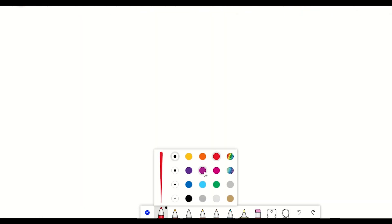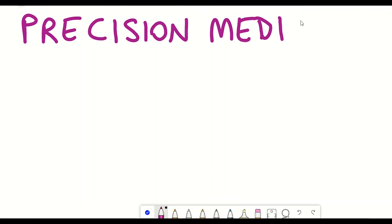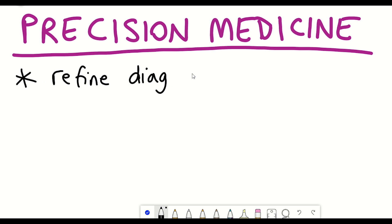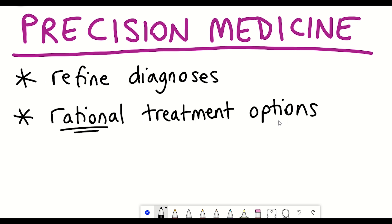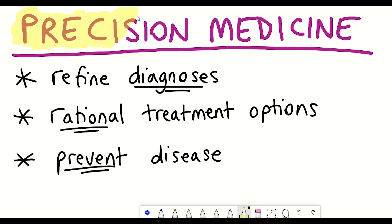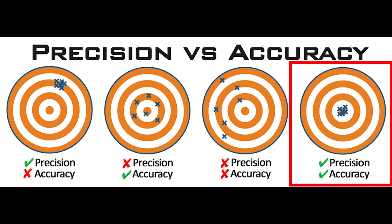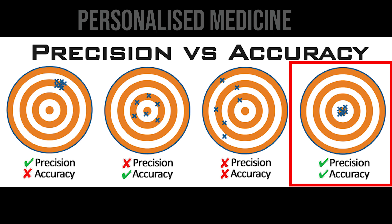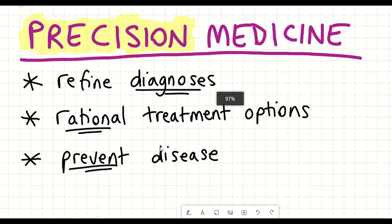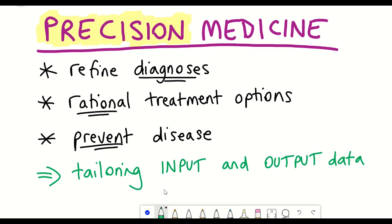So extending the same principles back to precision medicine, the aims of precision medicine is to be able to refine diagnoses, provide more rational treatment options, with the overall aim in preventing diseases. And this is reflected in the name precision medicine, with higher precision referring to the fact that more relevant results are achieved than irrelevant ones. Although I do hope that it's also accurate, not just precise. And so you may have also come across this term as personalised medicine. But they all pretty much mean the same thing, tailoring the input and output data to an individual.